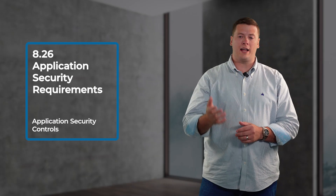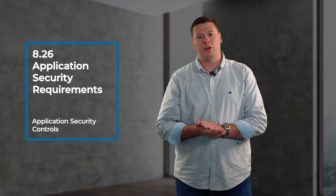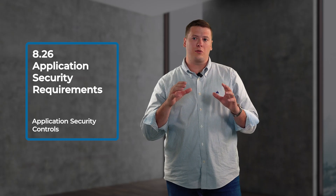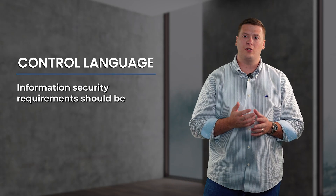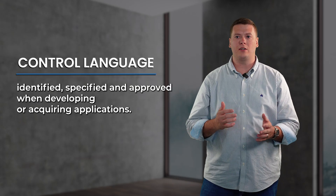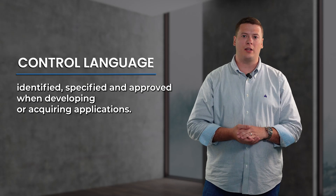The next control is 8.26. It covers application security requirements. This control is going to be looking for things that are more specific to application development. The control language is: information security requirements should be identified, specified, and approved when developing or acquiring applications. What that means is that you need to specify the security requirements of any new applications your business may be buying or building.